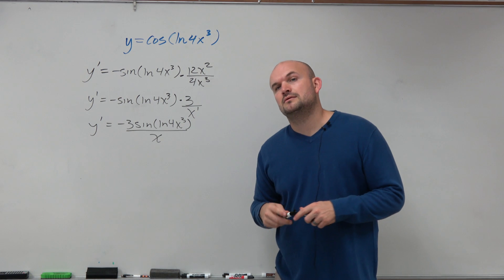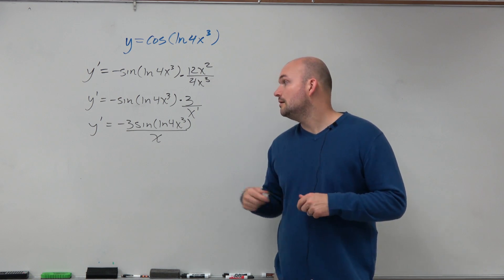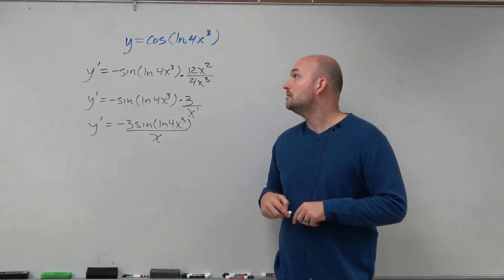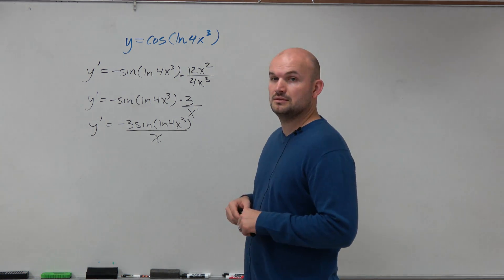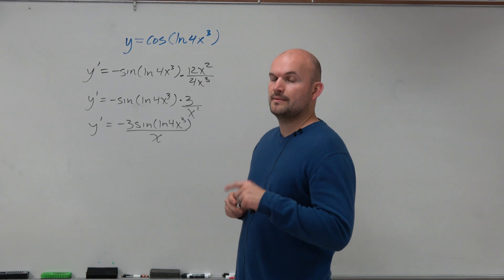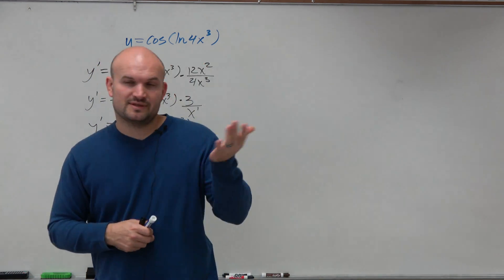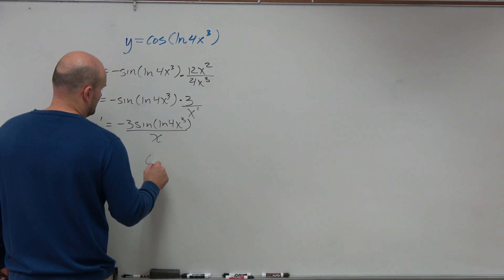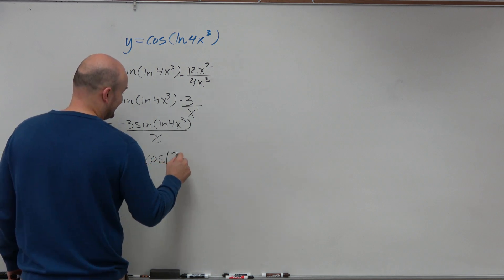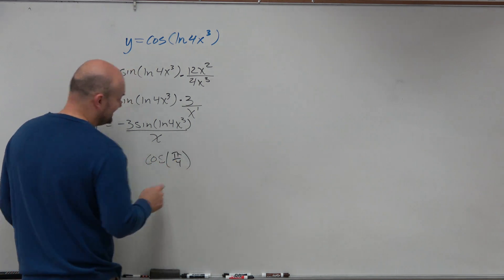Can you explain why you did it like that rather than using the product rule? Because there's no product. It's not cosine times something. Remember the cosine function. So think about how you say cosine. Say this out loud. Cosine.